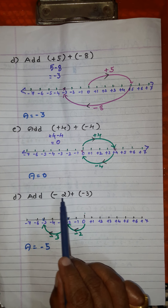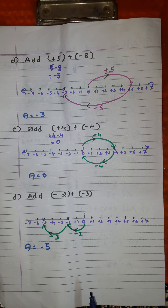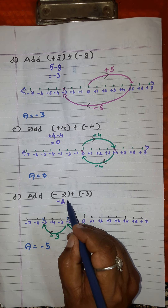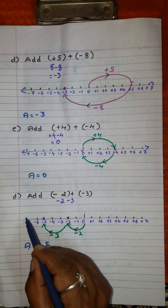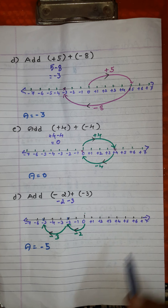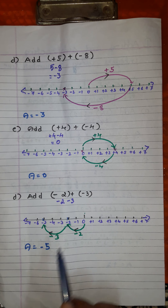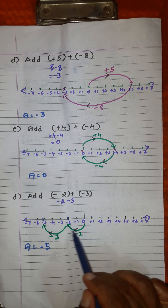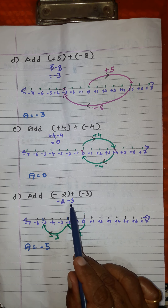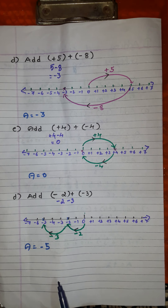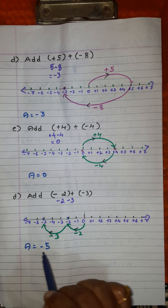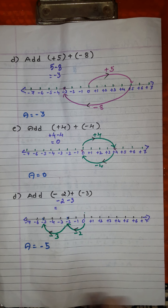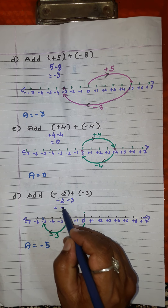Sixth problem: add minus 2 and minus 3 — adding negative integers. Simplify: minus 2, plus into minus gives minus 3. Draw a number line, mark positive integers to the right of 0 and negative integers to the left of 0. Starting from 0, for minus 2 move 2 divisions in the left direction: 1, 2. Again, minus 3 from here: 1, 2, 3. Where do we reach? Minus 5. What is the answer? Minus 5. Note: we are adding negative quantities, not multiplying minus by minus.